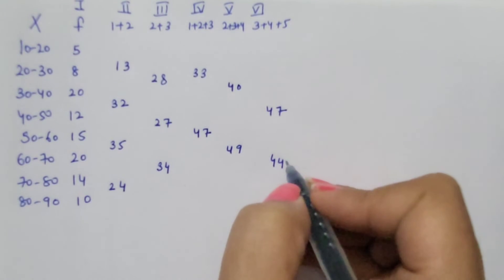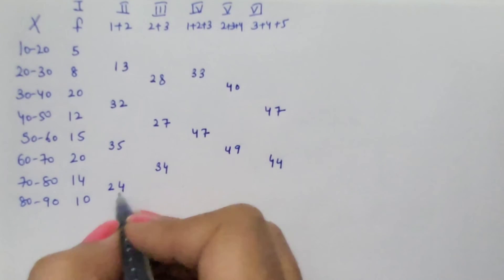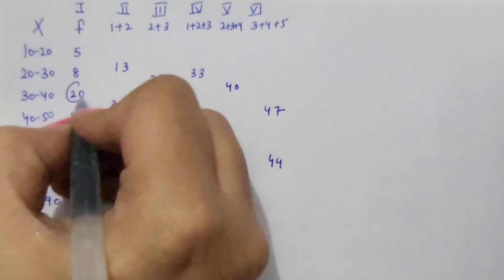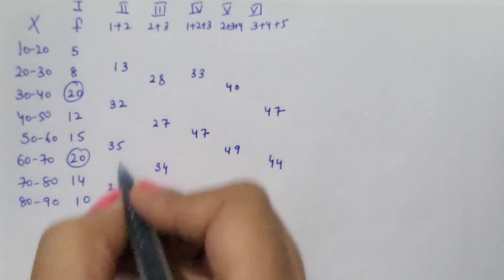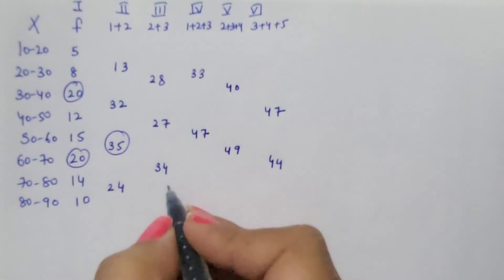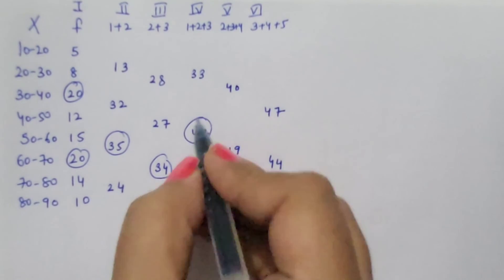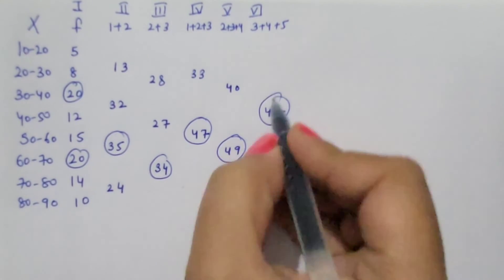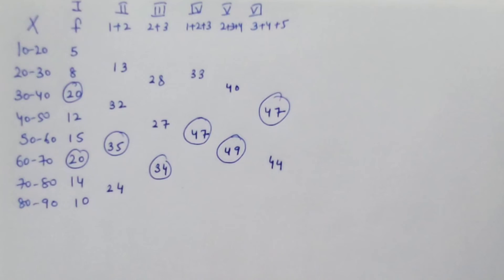Next step is to encircle the highest frequency. Highest frequency 20, 35, 34, 47, 49 and 47.